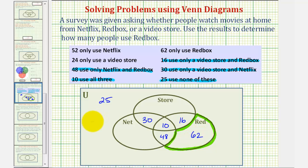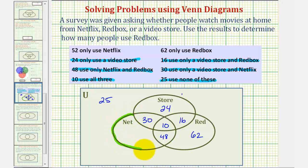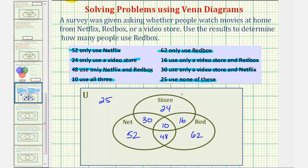We actually have all the information we need to answer the question, but let's complete our Venn diagram. This region represents the people that only use a video store, which would be 24. And this region represents the people that only use Netflix — 52 only use Netflix. Now to answer the question: we want to determine how many people use Redbox, which is the total number of people in the Redbox set.